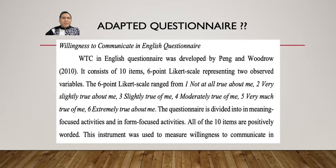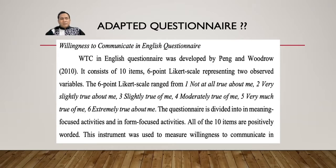For adapting, for example in chapter three you write: 'WTC in English questionnaire was developed by...' When you develop your questionnaire by adapting, you use a base questionnaire and add points to it. You explain the items, how many items there are, what type of questionnaire it is, and the components or aspects measured.